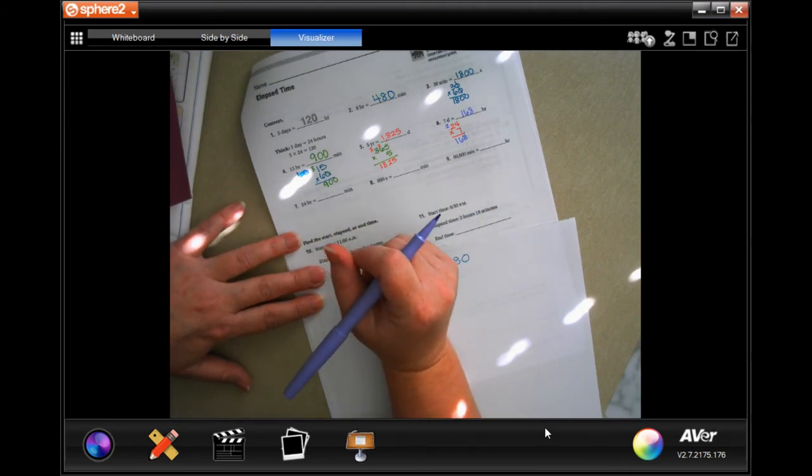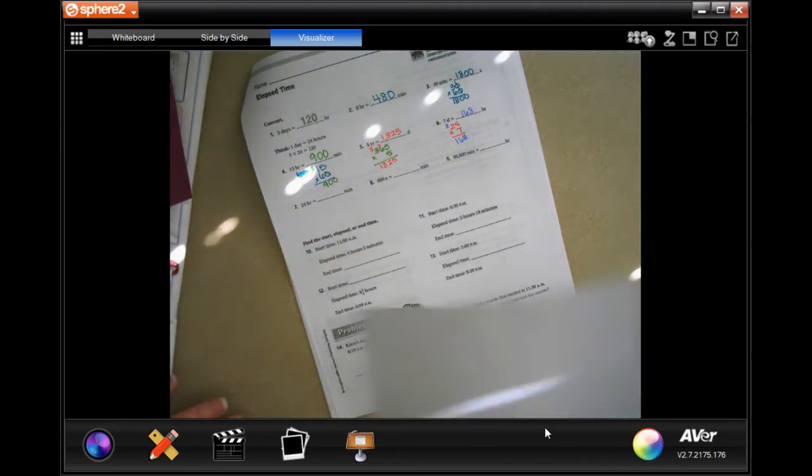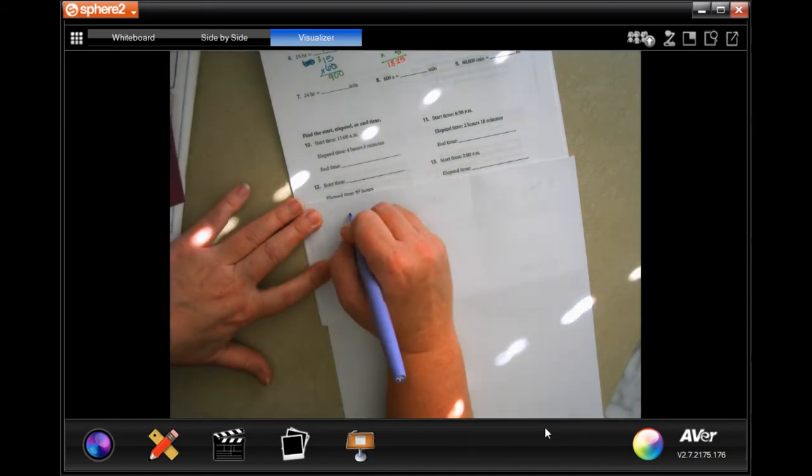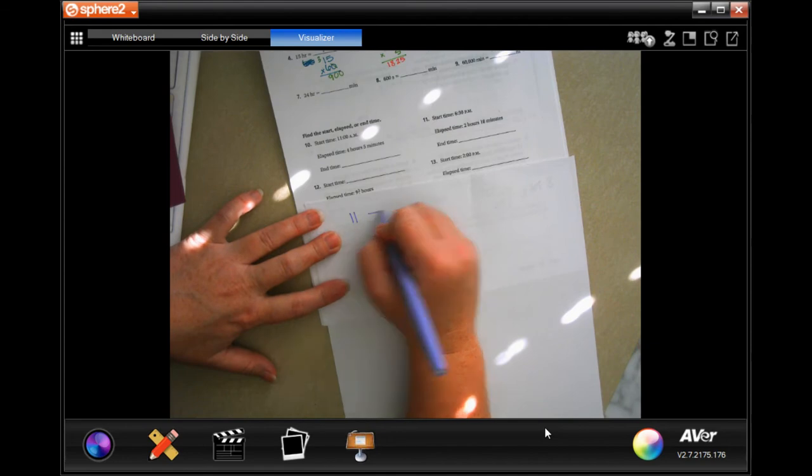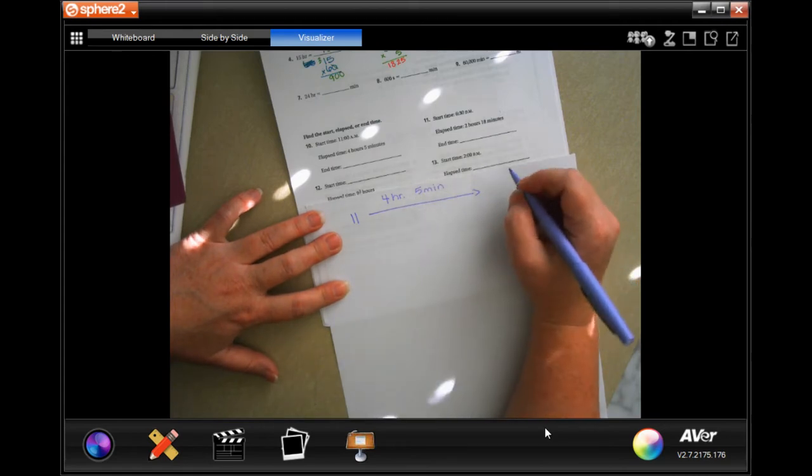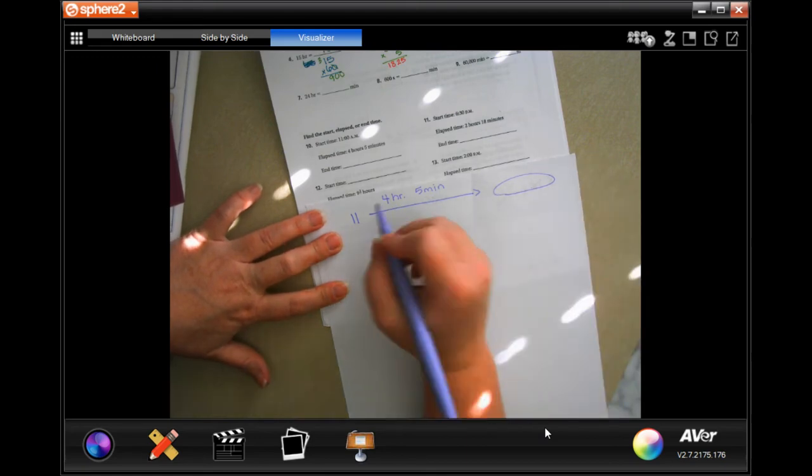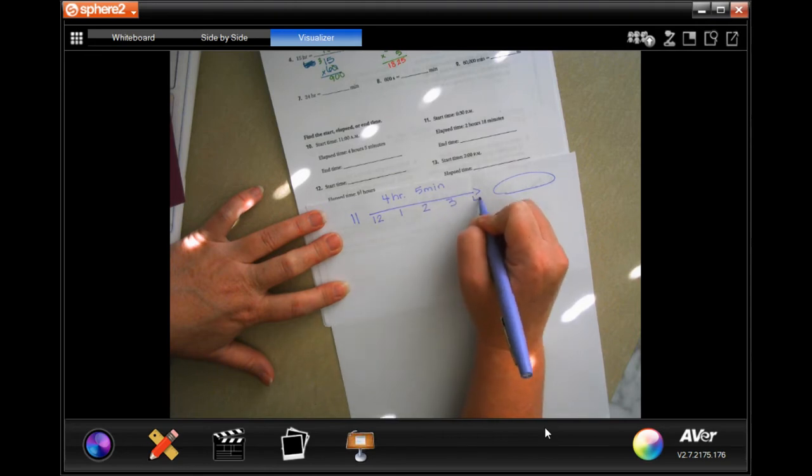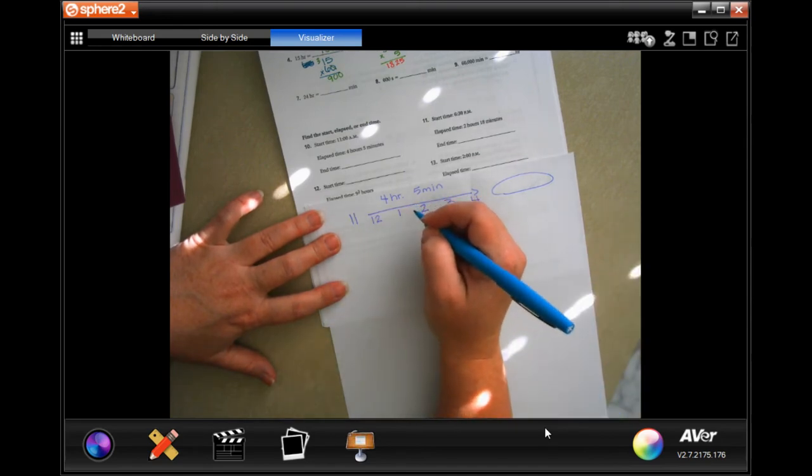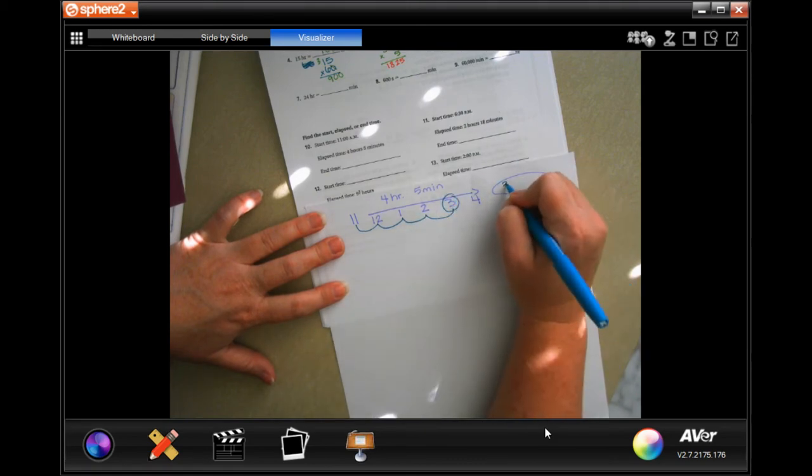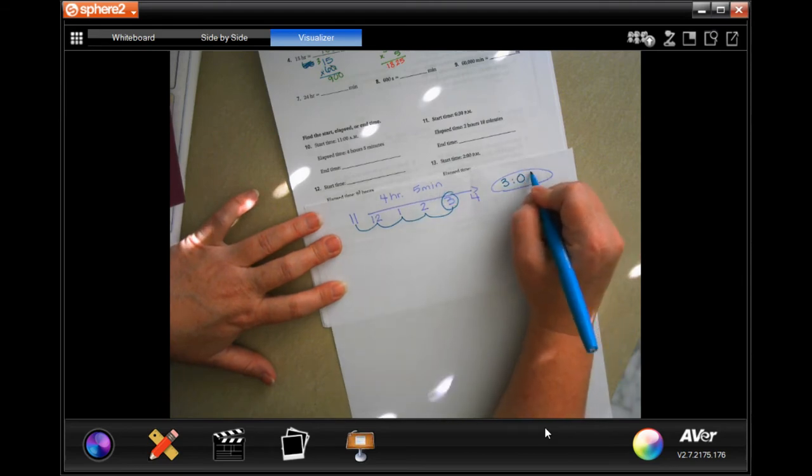We are going to find the start, elapsed, or end time. The start time is 11 a.m. and we're going 4 hours and 5 minutes. I want to know what time we ended. So 12, 1, 2, 3, 4 - so four hours. 3:05 and we started in AM, we passed 12 which means it's now PM. 3:05 PM.